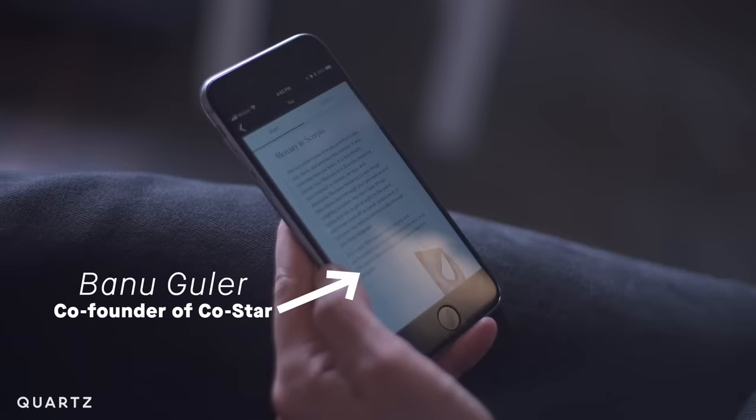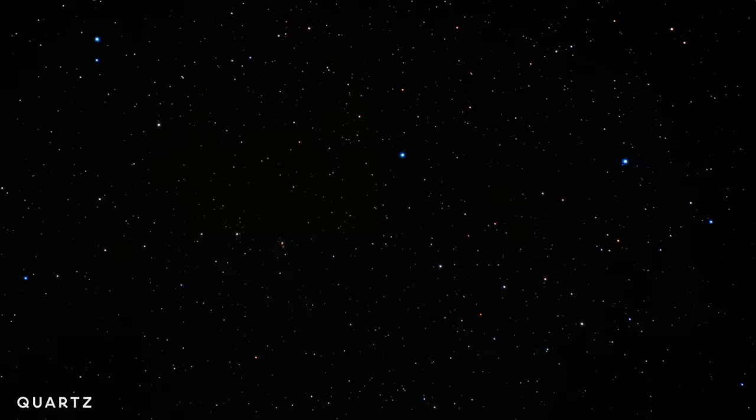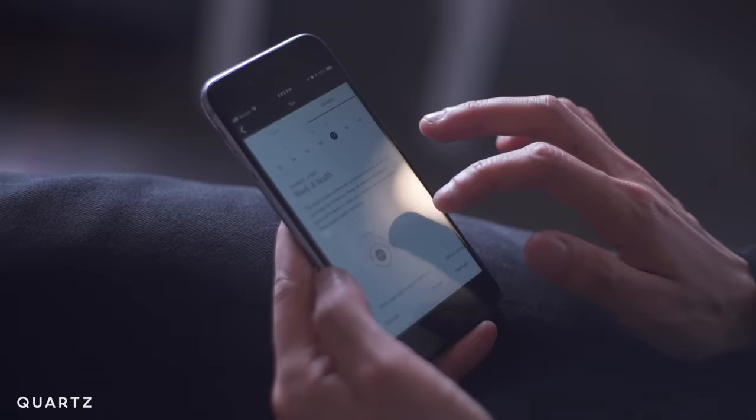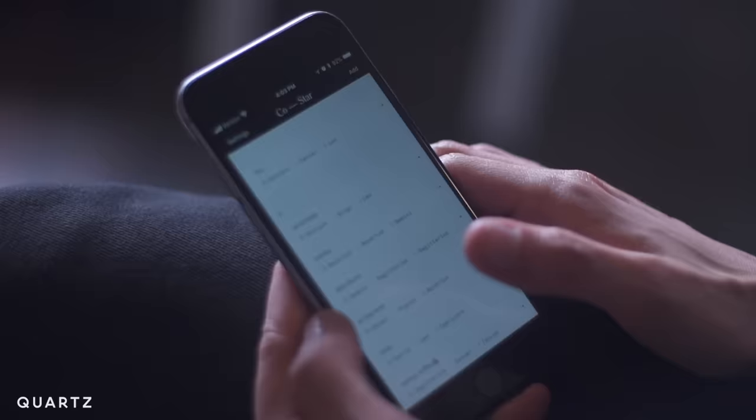We were completely floored by how much response we got. That's Banu Gular, co-founder of CoStar, a new social astrology app. CoStar takes NASA data on stars and planets and turns them into personalized predictions based on algorithms tuned by professional astrologers.